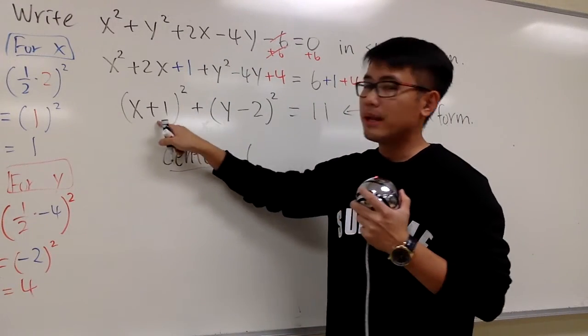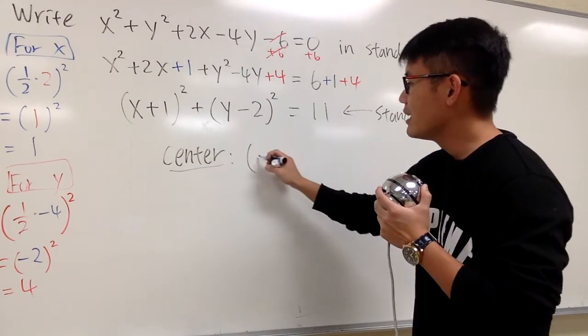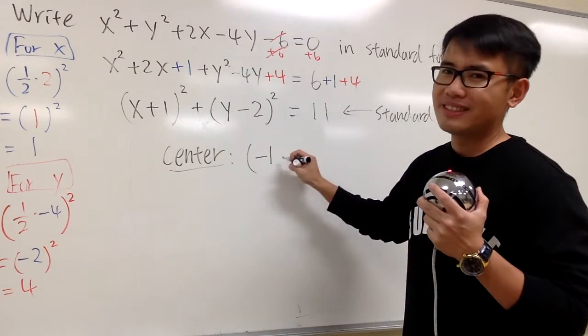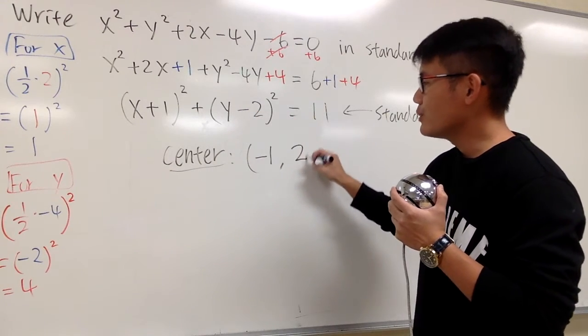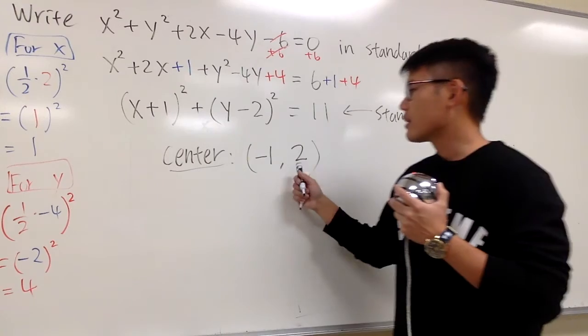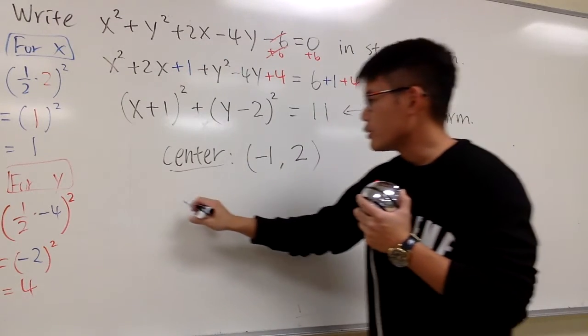That's the purpose of complete the square, so that we know the center and the radius of the circle. So the center, we have x plus 1, but it's technically negative 1. Right? It's the opposite. And this is y minus 2. So it's actually a 2. Center, negative 1, 2.